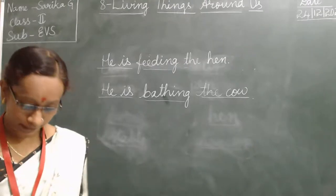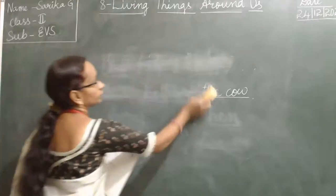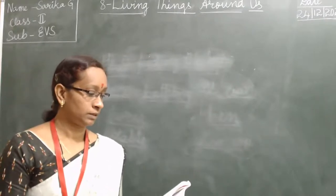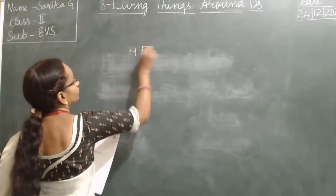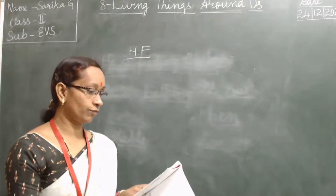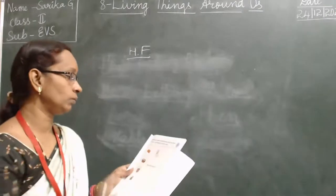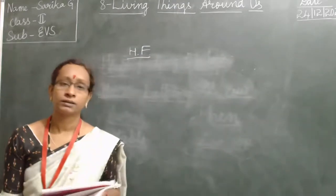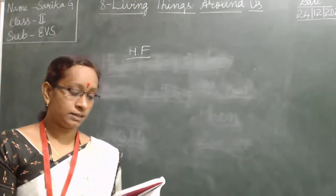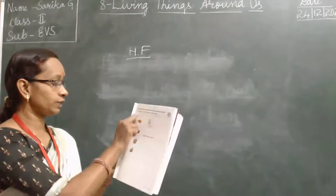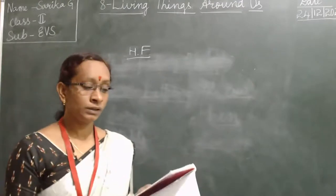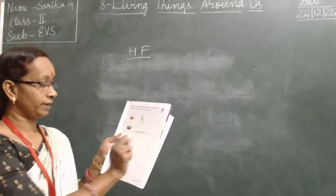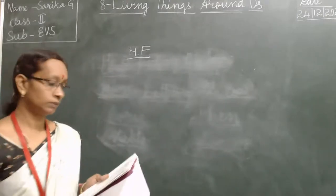Next, open companion book, page number 31. This kitten is looking for a new home. Adopt it and give it a name. Circle the things the kitten needs. You have to adopt a kitten, give it a name, and write it in the space provided.